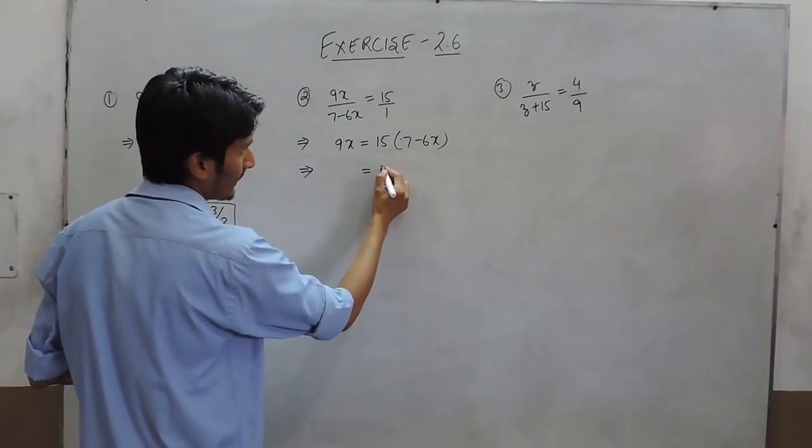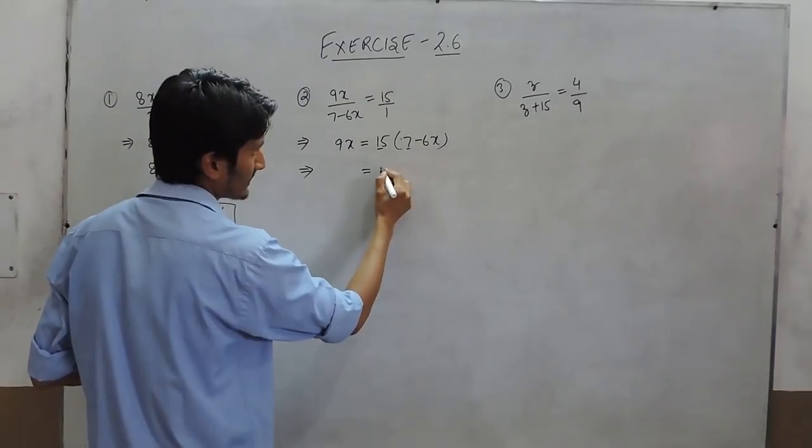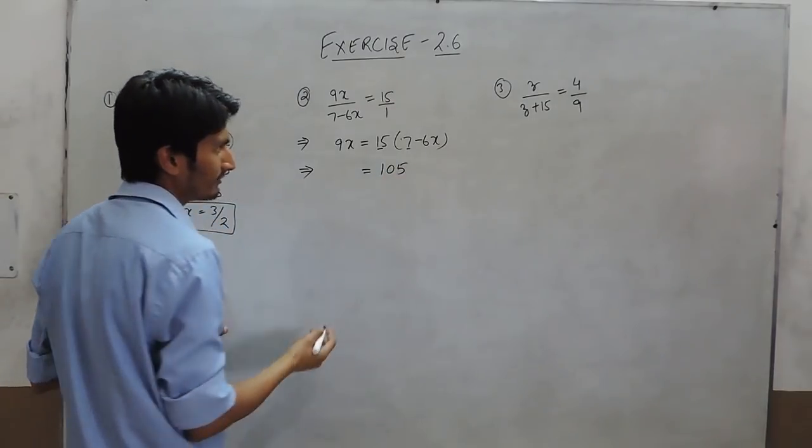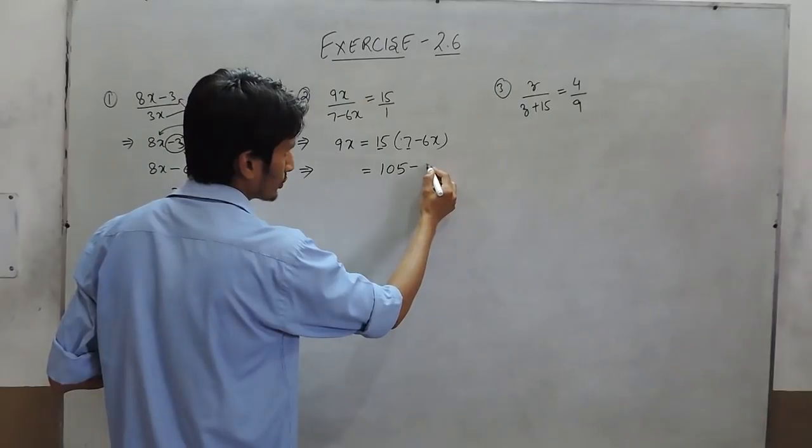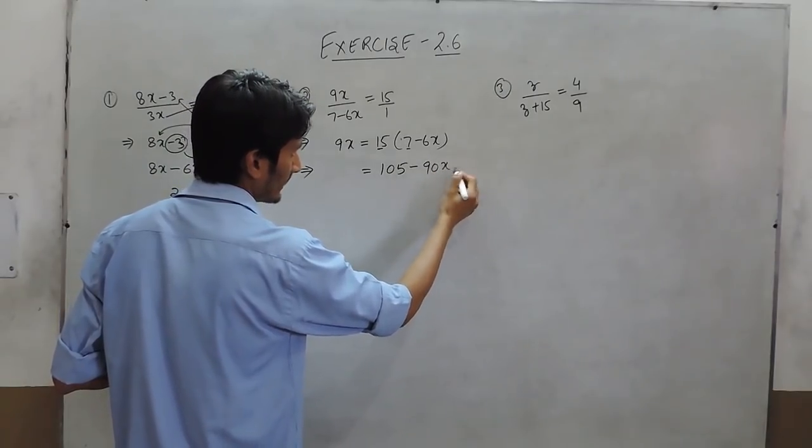So we have to open this bracket. So when 15 multiplied by 7 is 105. And when this is multiplied by 6 is equal to 90x.